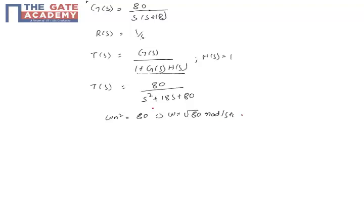This is determined from the standard second order format. A second order system will have its parameters corresponding to this particular format. Omega n square is 80 in this case, from which we have reduced omega n to be root of 80.